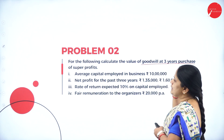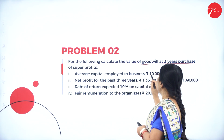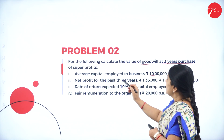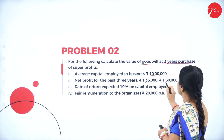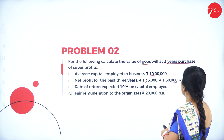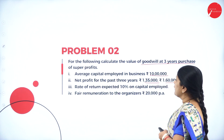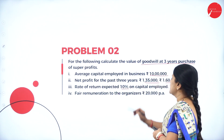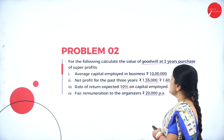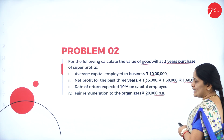Problem two: Calculate the value of goodwill at three years' purchase of super profits. The average capital employed in the business is 10 lakhs. Net profit for the past three years is 1 lakh 35,000; 1 lakh 60,000; and 1 lakh 40,000. The rate of return is 10 percent and the fair remuneration to the organizers is 20,000 per annum.